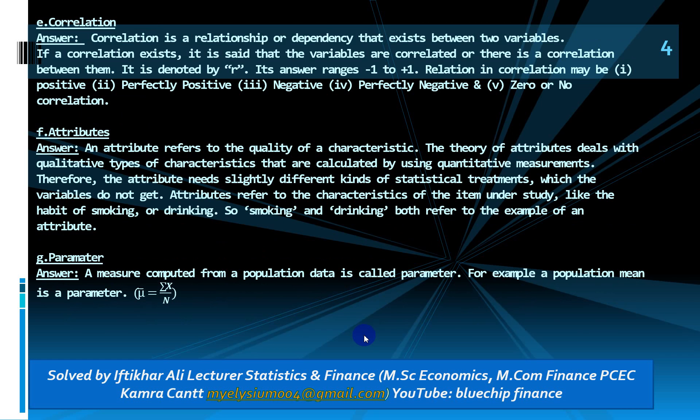The theory of attributes deals with qualitative types of characteristics that are calculated using quantitative measurement. Therefore attributes need slightly different kinds of statistical treatments which variables do not. In simple terms, a qualitative variable is also called an attribute. Parameter is a statistical measure of a population — for example, mean, variance, or standard deviation of a population.